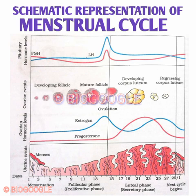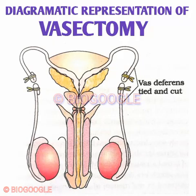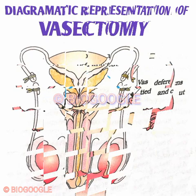Next is the schematic representation of the menstrual cycle — show all four phases of the menstrual cycle, including ovulation, clearly. Also show the formation of corpus luteum and all other stages, as well as the hormones like estrogen and progesterone at the correct positions.